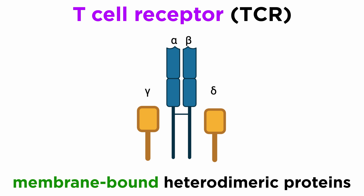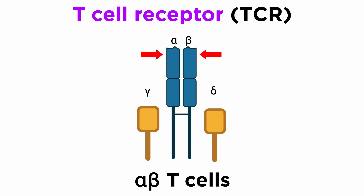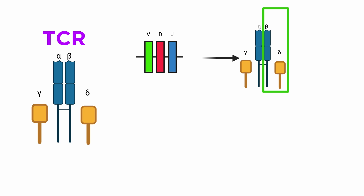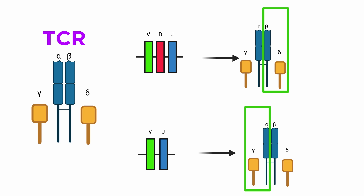T-cell receptors, or TCRs, are membrane-bound heterodimeric proteins normally consisting of the highly variable alpha and beta chains. T-cells expressing these two chains are referred to as alpha-beta T-cells, though a minority of T-cells express an alternate receptor formed by variable gamma and delta chains, referred to as gamma-delta T-cells. TCR beta chains and delta chains are similarly encoded by distinct sets of V, D, and J genes, while alpha chains and gamma chains are encoded by additional sets of V and J genes.